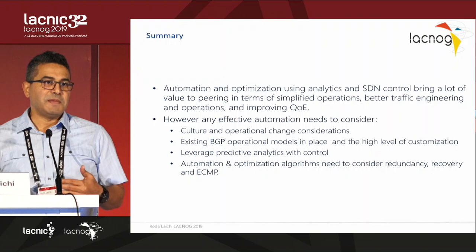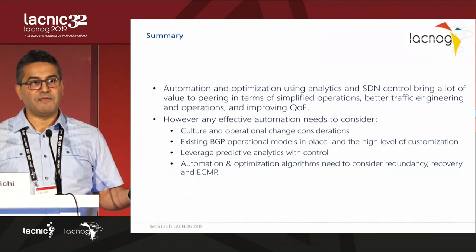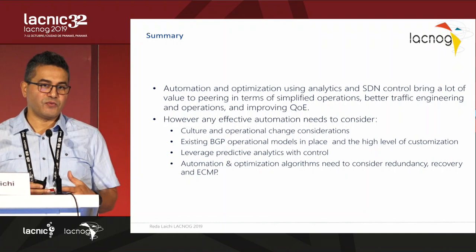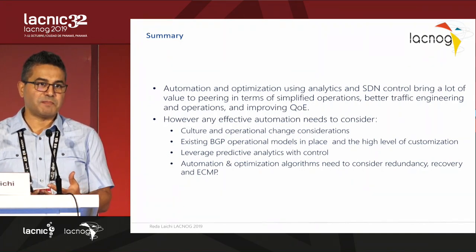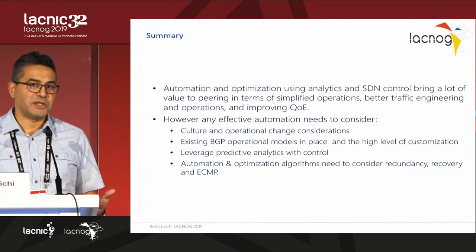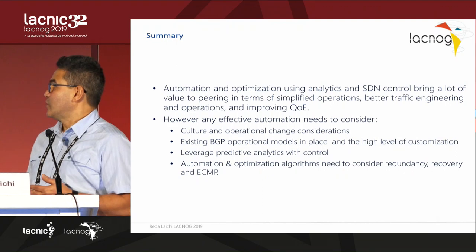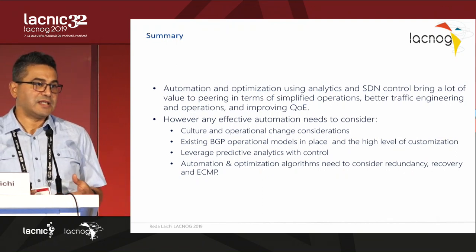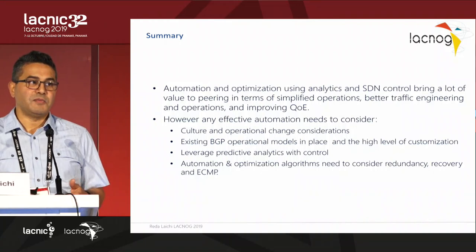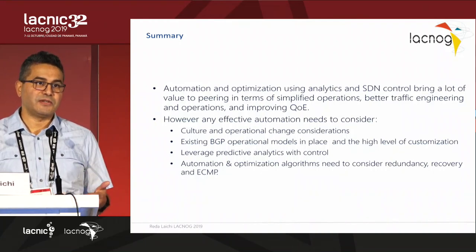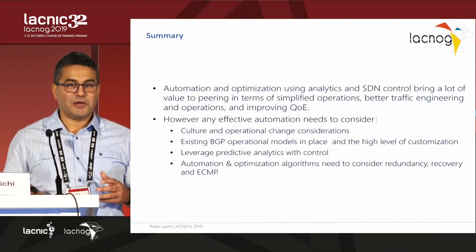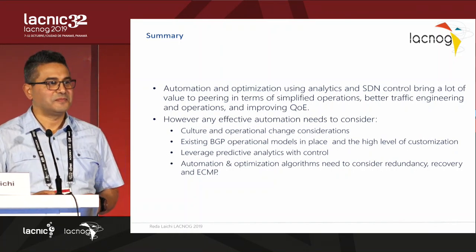Having extreme automation and leaving all decision-making to the software may be a bit much. You could consider having the solution provide the analytics and alternate path recommendations while leaving the operator to simply push a button to apply or undo changes. In closing, automation will add great value in peering and complex operations. There are many factors to consider: the human factor, multi-vendor aspects, and the redundancy and convergence time of BGP. Thank you — any questions?